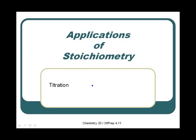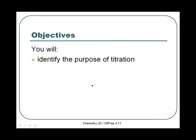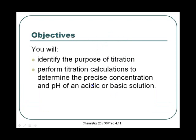Welcome back to the applications of stoichiometry. We're going to talk about titrations in this lecture. It's covered in your textbook on pages 312 to 315. By the end of this lecture you'll be able to identify the purpose of titration, and you will perform titration calculations to determine the precise concentration and pH of an acidic or basic solution.